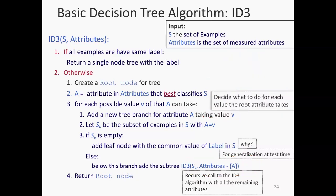Could you implement this without recursion? Of course — any recursive algorithm can be implemented iteratively; you'd have to keep your own queues and such. But for your homework, I would encourage you not to — it's much easier to do it recursively. In general, any time you have a tree data structure, it's natural to think recursion. You can implement it without recursion, but why?